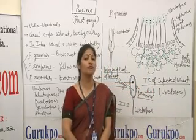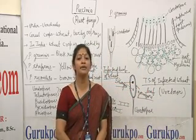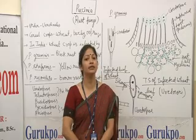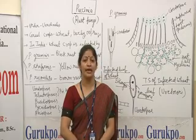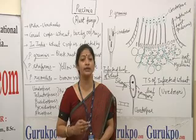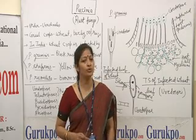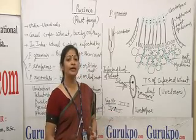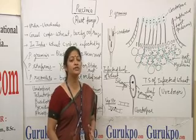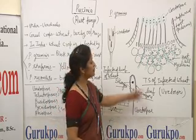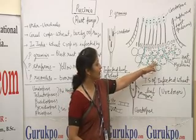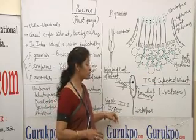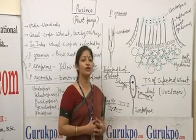Now we will see the vegetative structure of the mycelium. Paxinia graminis shows two types of mycelium: one is called dikaryotic mycelium and another is called monokaryotic. Dikaryotic means its cell contains two nuclei, and monokaryotic means its cell contains only one nucleus. The mycelium is branched and has button-shaped or spherical haustoria. These haustoria help in the absorption of nourishment for this fungus.